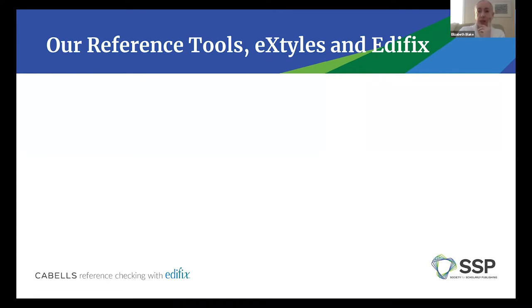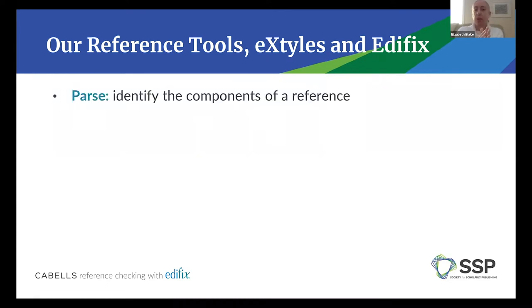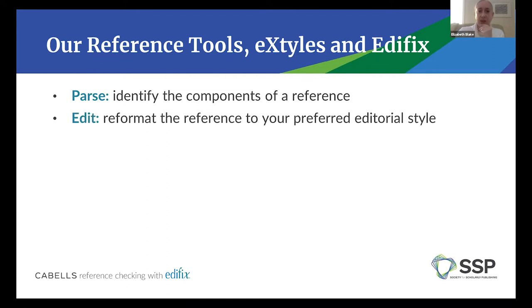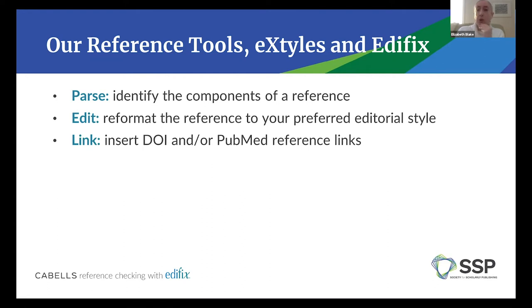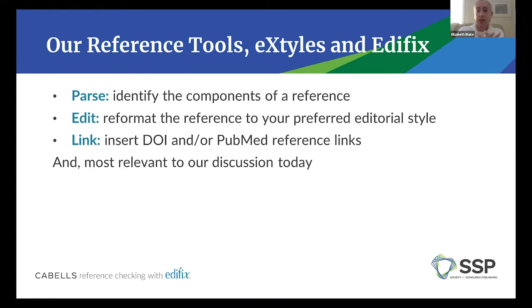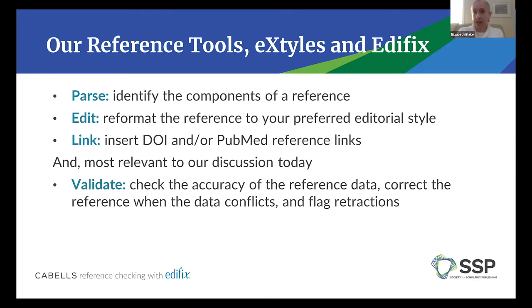Both of these tools do the same thing with references. We first do what we call parsing of the reference — identifying the components: author names, year, title, page numbers, etc. We can then rearrange those components and reformat the references to a preferred editorial style, so automatic copy editing. We can link the references to online databases such as Crossref and PubMed, and then we can validate the content in those references based on the data retrieved from those databases.